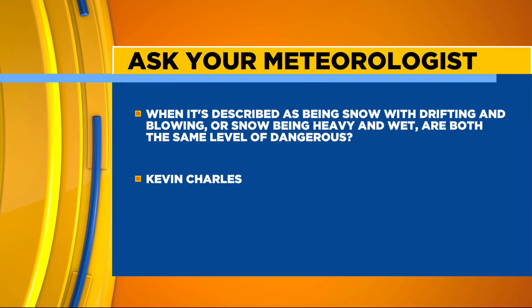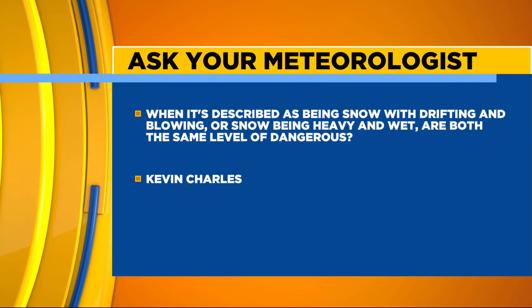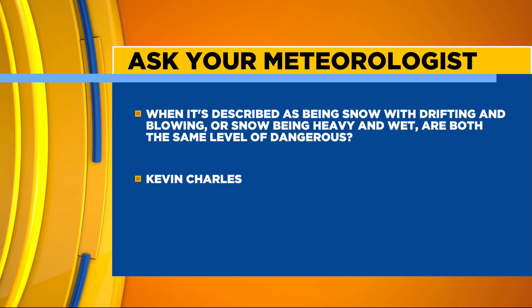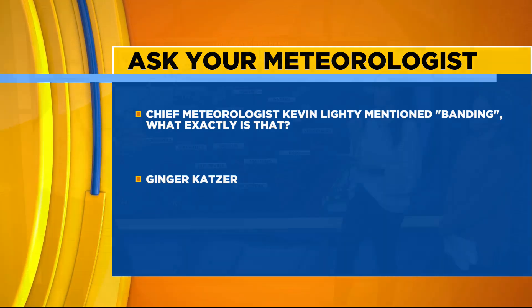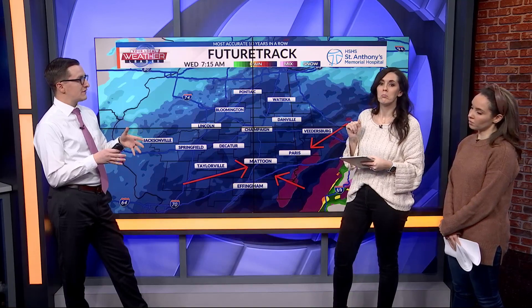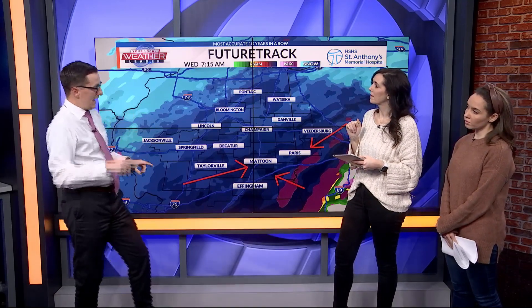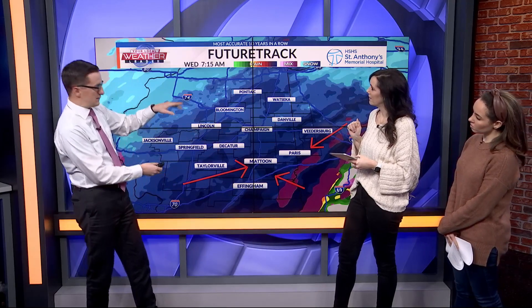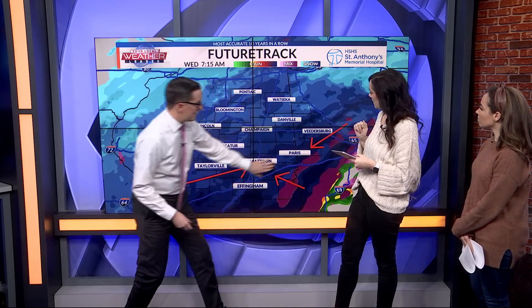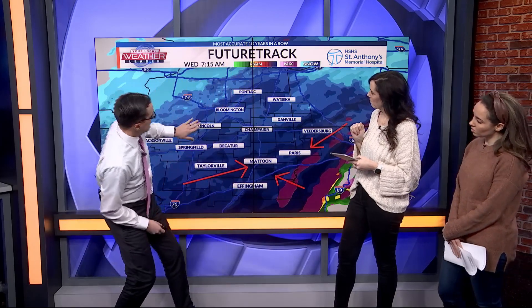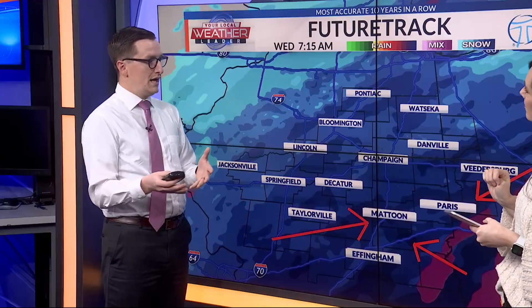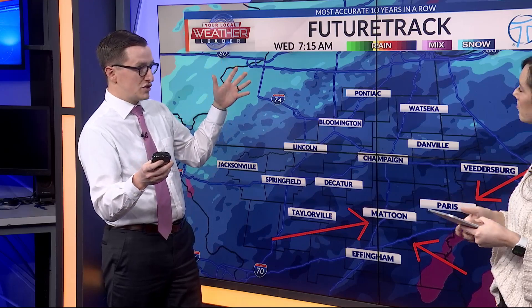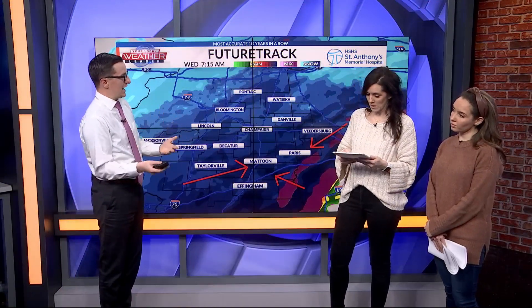Maybe we should get to Ginger's question. Chief Meteorologist Kevin Lighty mentioned banding — what exactly is that? So Kevin mentioned on his Facebook page, hey, there might be a band of heavier snow. Think of it as a pocket of heavy rain along a corridor. I pulled this graphic from a post he put on his Facebook page. He was pointing out these darker blues — that's a band of heavier snow. You can almost see there's another band right there. Under those bands is where you have higher snowfall rates, so instead of everyone getting equal amounts of snow, people that find themselves under that banding are often going to see those higher snowfall amounts play out.